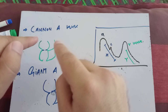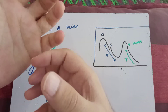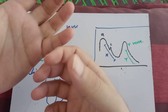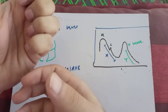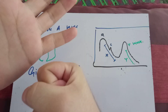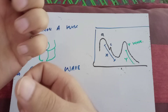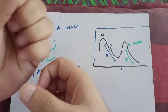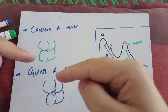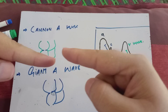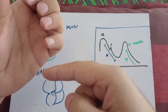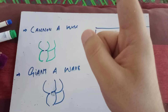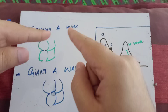In third degree heart block, why is there cannon A wave production? Because the atria contract out of proportion relative to the ventricle — there is no coordination. In a normal cardiac cycle, first there is right atrial contraction, then ventricular contraction. If there is coordination, the tricuspid valve opens then closes. But if they are contracting out of proportion, the valve is closed against the atrial contraction. So when the atria contract against the closed valve, blood moves towards the neck in a huge amount, producing a cannon A wave.